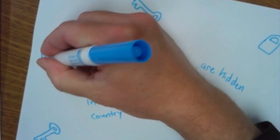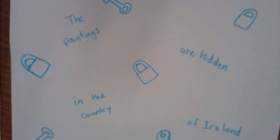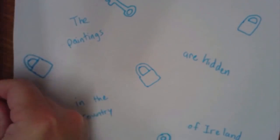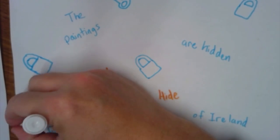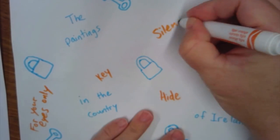So the secret message here is 'the paintings are hidden in the country of Ireland.' Then I drew some locks and some keys and just kind of spread the blue color around so it doesn't look like it's only in one central area.